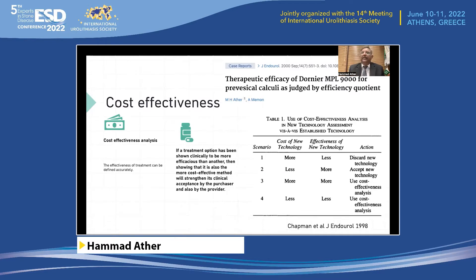In order to define cost-effectiveness, we first have to define the effectiveness of a treatment. For urolithiasis, stone-free rate is the default setting to define effectiveness. Many years back, we wrote a paper in the Journal of Endourology talking about the efficiency quotient rather than the actual stone-free rate, in which we incorporate the additional treatment and the number of times a treatment is administered — for example, for ESWL. If the treatment is done more than once, the effectiveness decreases. So it's important that we have the correct definition for effectiveness.